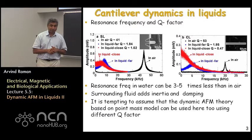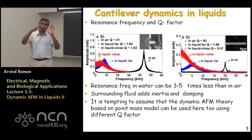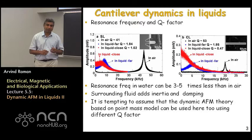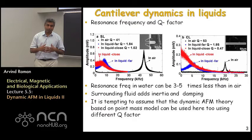Why this happens has to do not with the sample but with the fact that the cantilever is surrounded by water — a dense, highly viscous fluid. As the cantilever oscillates, it moves along with a large mass of water that must move due to the cantilever oscillations. This is called the added mass effect. Because the resonance frequency in water is about 3 to 5 times less than in air, one can calculate that the added mass of the surrounding water is about 10 to 20 times that of the cantilever's suspended mass itself.